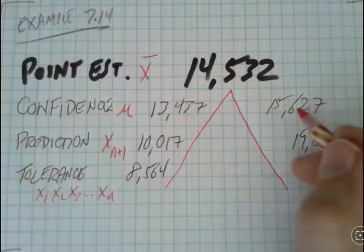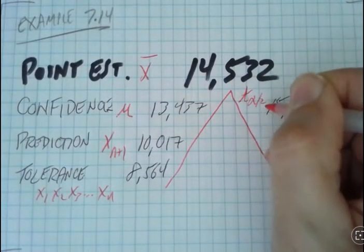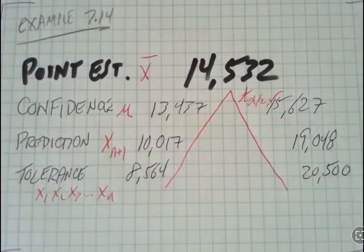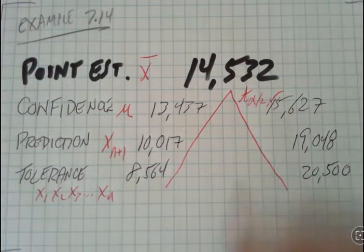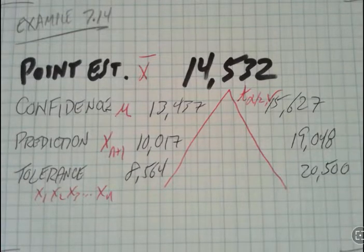This calculation of the confidence interval was based on t alpha over 2v for my degree of freedom, my n minus 1, if you will. There's a multiplier effect that, based on my sample size and level of confidence I want, that width is going to get wider. But still, it's the confidence interval in a single value, mu, so it doesn't get as wide as others.